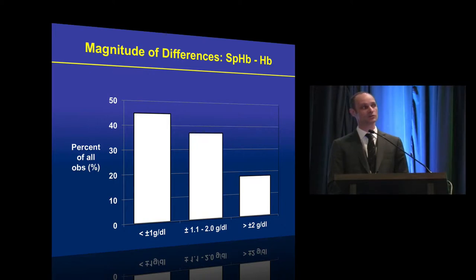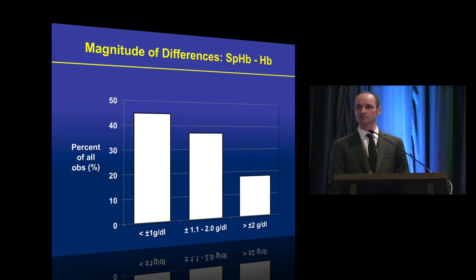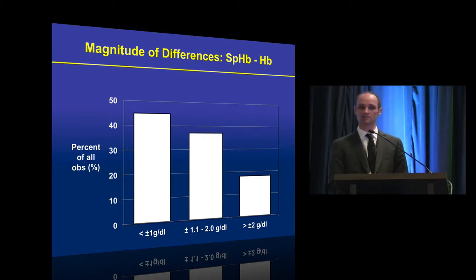We also looked at the magnitude of the differences for each observation. What we found was that in over 40 percent of observations, the difference between the non-invasive and lab hemoglobin value was less than plus or minus one gram per deciliter. However, in over 30 percent of observations the difference was between 1.1 and two grams per deciliter, and in nearly 20 percent it was greater than plus or minus two grams per deciliter. This is somewhat worrying, as it means the device can be grossly overestimating or underestimating the actual hemoglobin concentration in some patients.